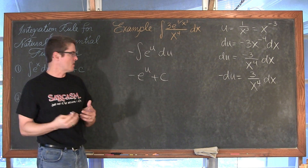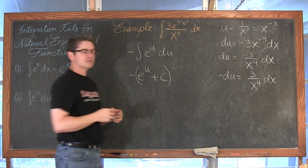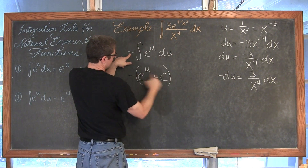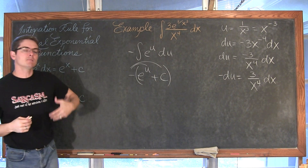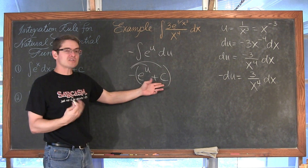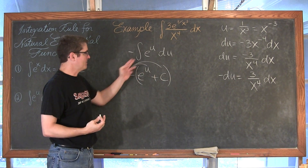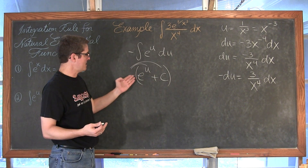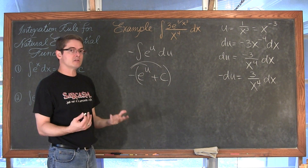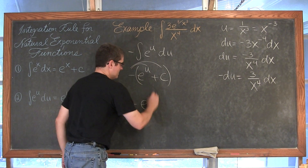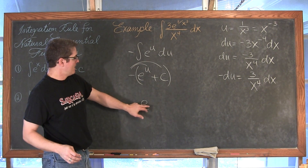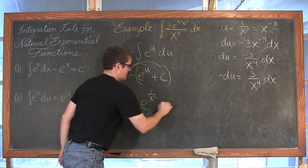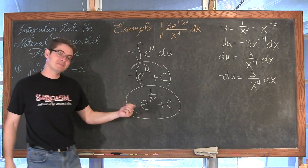Just a reminder: it is negative e to the u, and really we should think about that negative multiplying through the parenthesis. But c is just an unknown constant — if I multiply by negative, I am just changing the sign of an unknown constant, so we don't have to show that sign change on c and can just leave it as plus c. Substituting back, u was 1 over x to the third, so the answer is negative e to the 1 over x to the third, plus c.